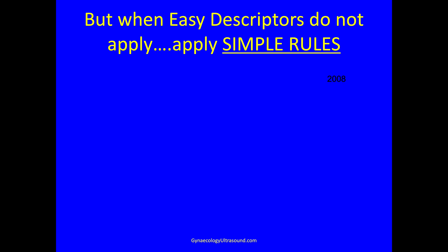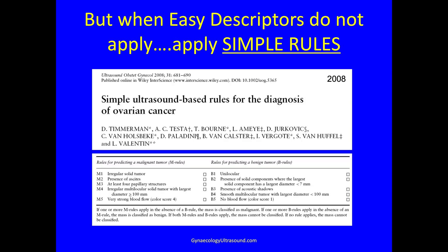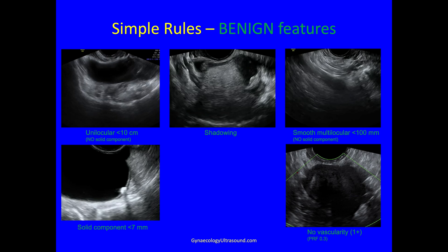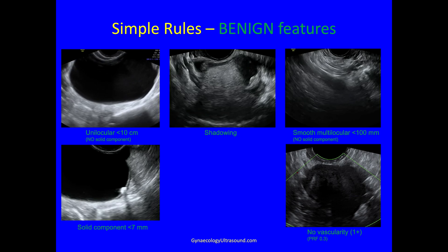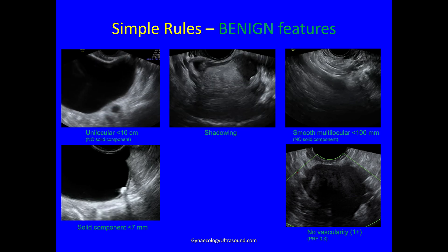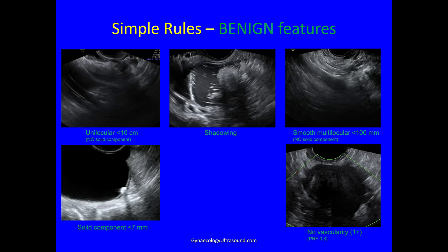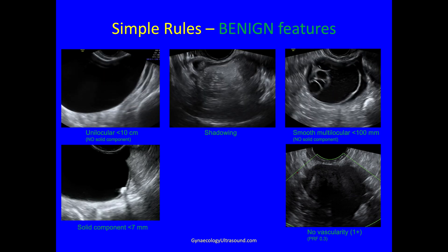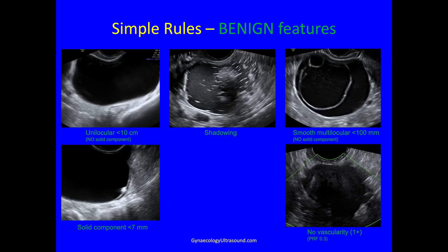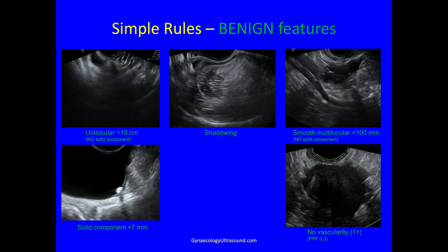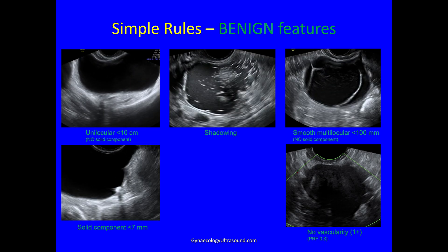When easy descriptors don't apply, the IOTA group gave us simple rules from a paper published in 2008. There are benign features and malignant features. Benign features include: a unilocular lesion less than 10 centimetres with no solid component; shadowing behind the lesion; smooth multilocularity less than 10 centimetres; a tiny solid component; and no vascularity.